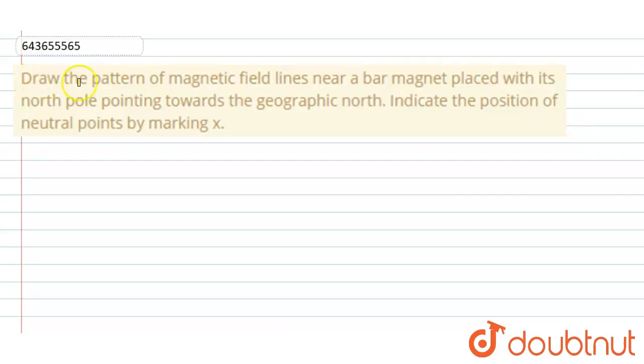So here the question is: draw the pattern of magnetic field lines near a bar magnet placed with its north pole pointing towards the geographic north. Indicate the position of neutral points by marking x.